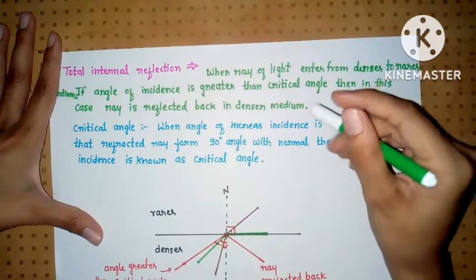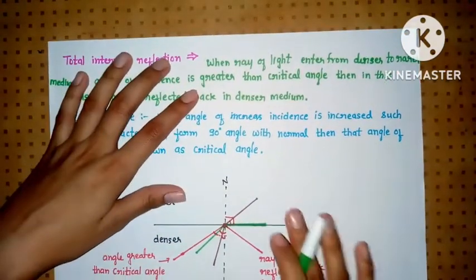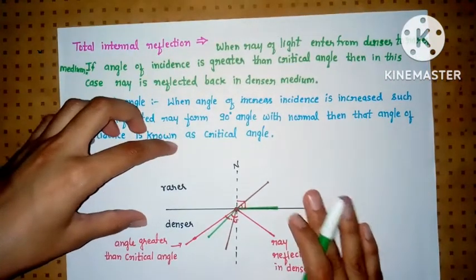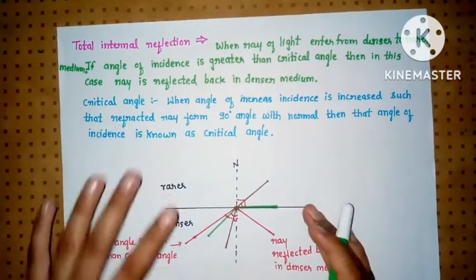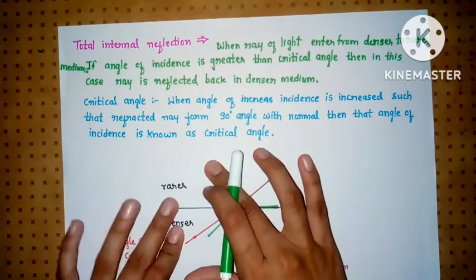So what is total internal reflection? When a ray of light enters from a denser medium to rarer medium, the light bends away from the normal.